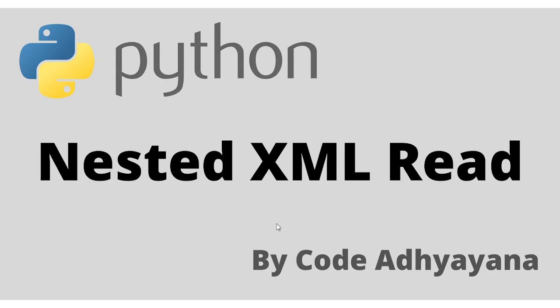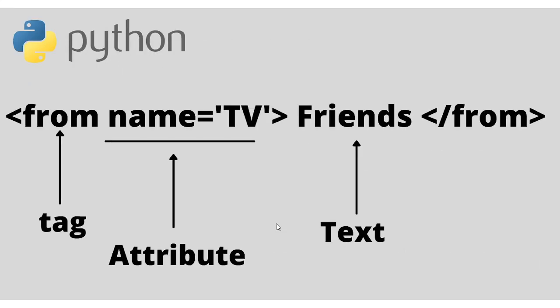Today we will first discuss a little bit about XML, then we will read nested XML data. In this picture you can see we have 'from' as a tag, 'name equal to television' as an attribute, and 'friends' as text. So basically in any XML file you will find these three properties: tag, attribute, and text.